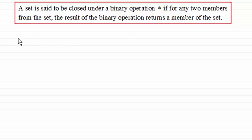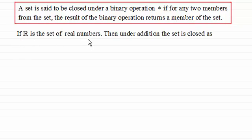So for instance, if R is the set of real numbers, then under addition the set is closed. As let's say we had 2 plus 3, we know that equals 5. We take two real numbers, add them together, we get back a real number. And 5 is in the set, it's a member of the set of real numbers.